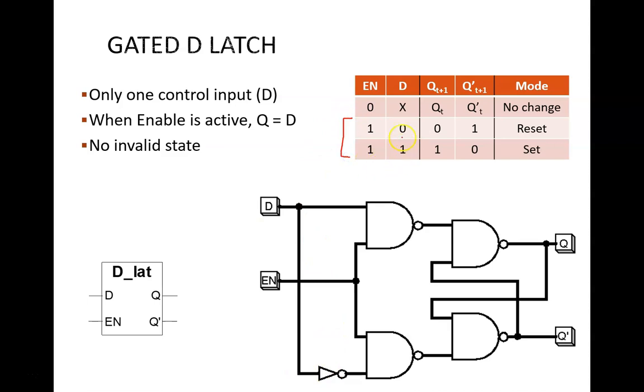When D equals 0, the circuit is in reset mode and Q is forced to 0. When D equals 1, the circuit is in set mode and Q is forced to 1. There is not a no-change mode or an invalid mode.